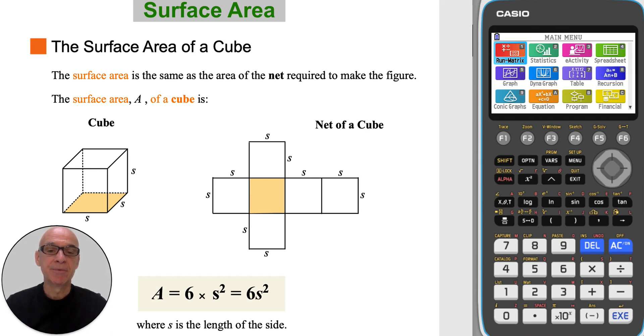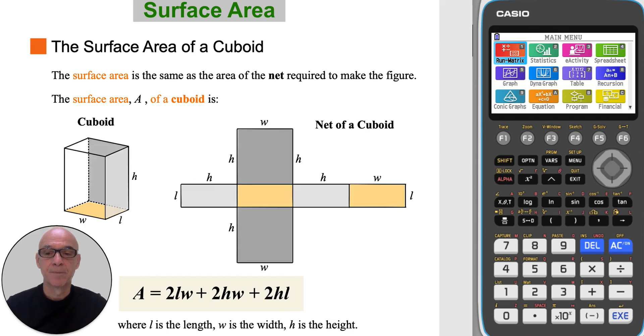The net of a cube is shown here. The surface area of a cube is 6 times s squared, where s is the length of the side of the cube.